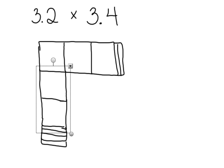So, estimate. Three and two-tenths is estimated to what? Three. And three and four-tenths is estimated to? Three. What is three times three? Nine. So we know that our answer will be about nine.